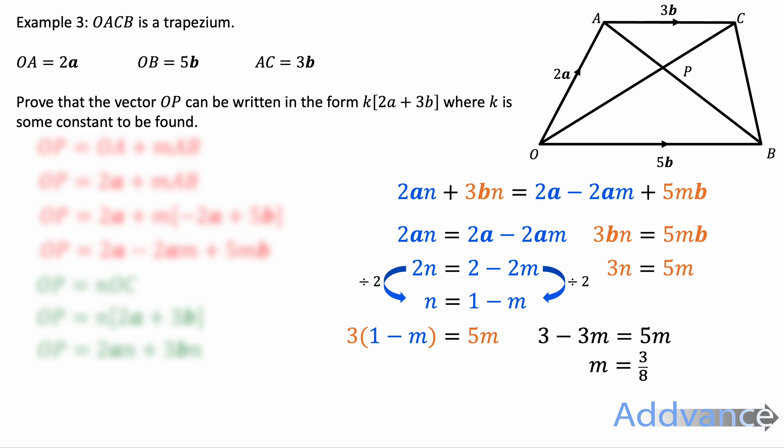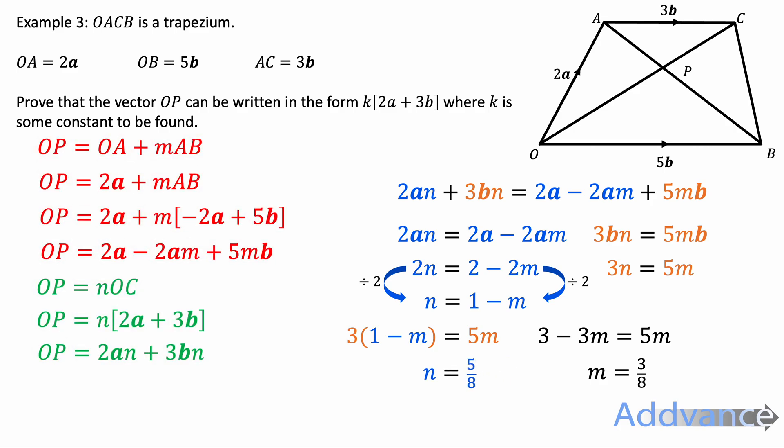And we get m equals 3 eighths. Now we also know that n is equal to 1 minus m. So we substitute m into this expression. n is equal to 1 minus 3 eighths. And so n is equal to 5 eighths.